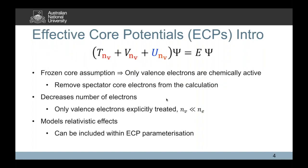Effective core potentials, or ECPs, are one of the biggest ways we get around these challenges of applying ab initio methods to heavy elements. Whereas operators previously operated over all electrons, now they only operate over the valence electrons. ECPs are based on the frozen core assumption: only valence electrons are chemically active, so we can remove spectator core electrons from the calculation and replace them with a simple potential representing them. This decreases the number of electrons, since only the valence electrons are explicitly treated.